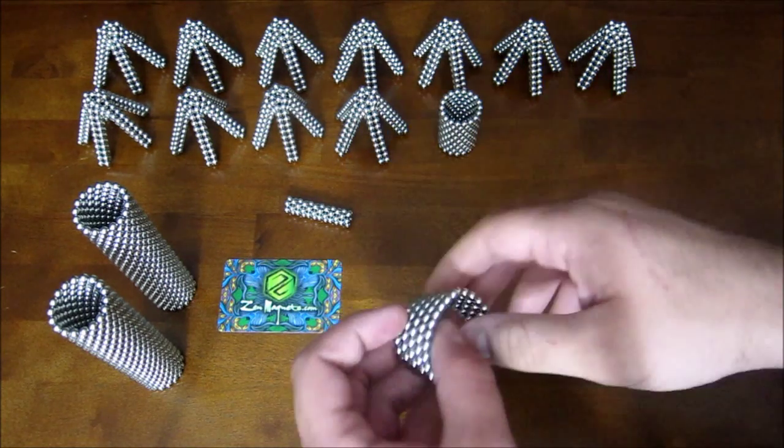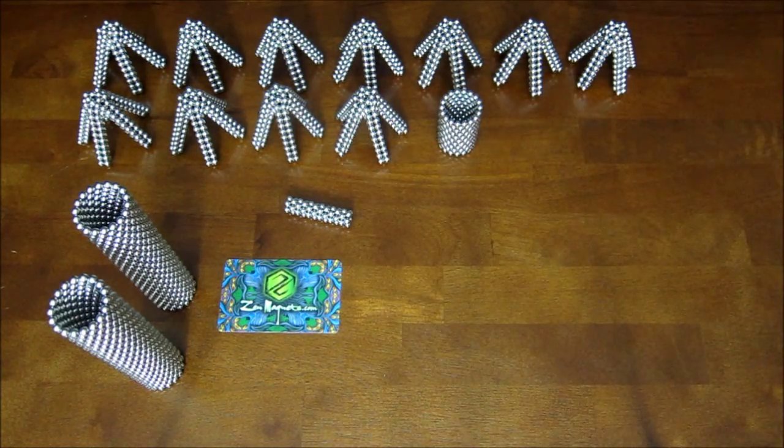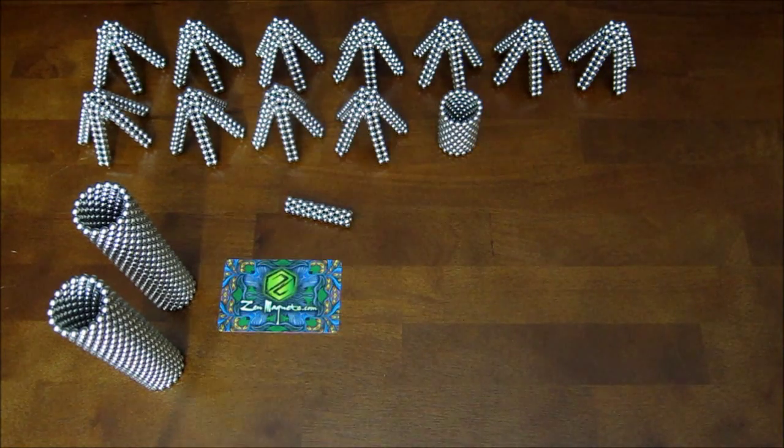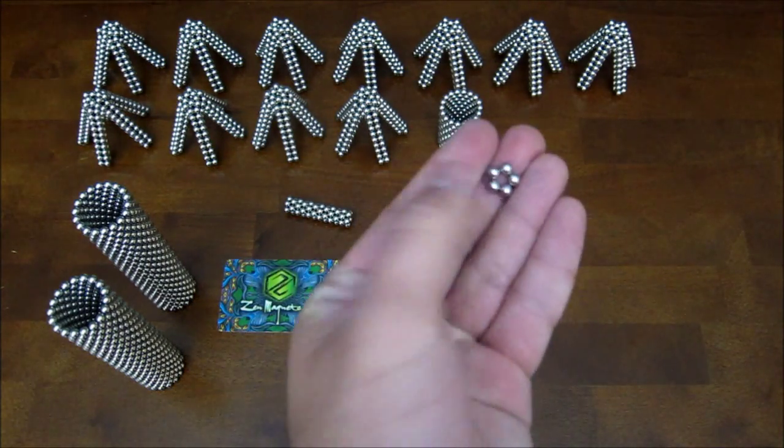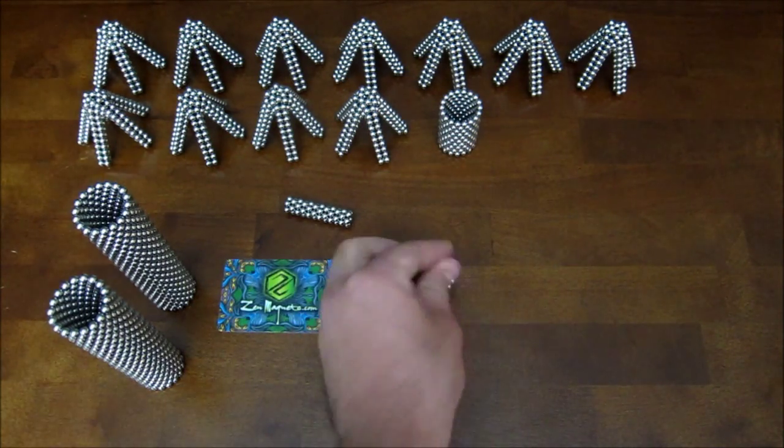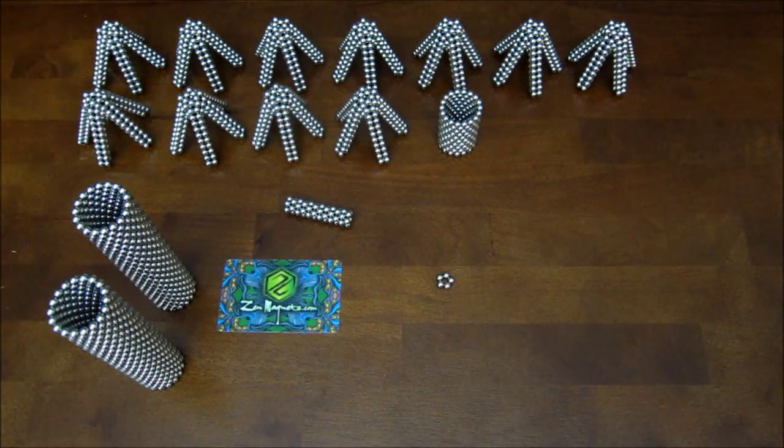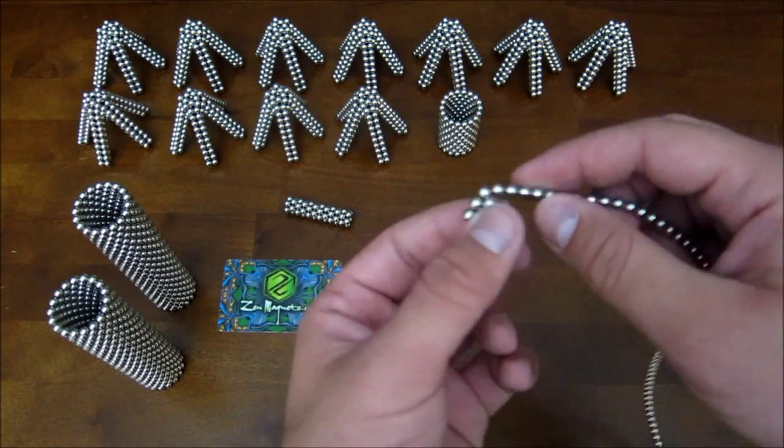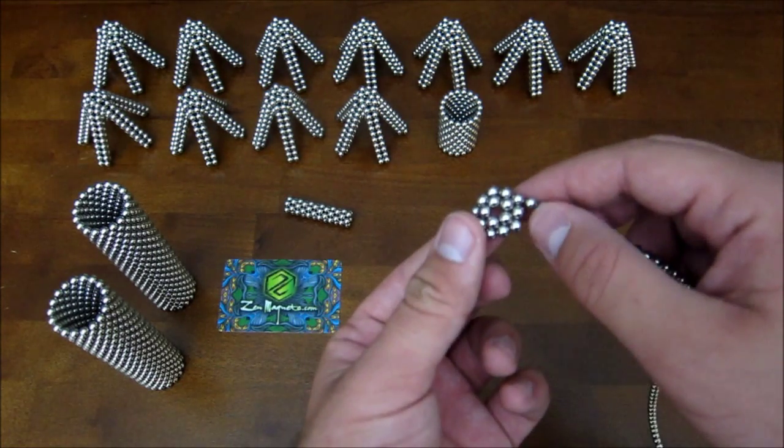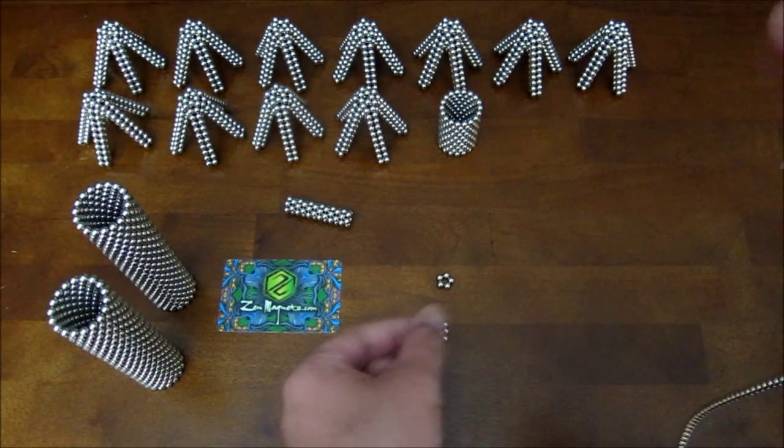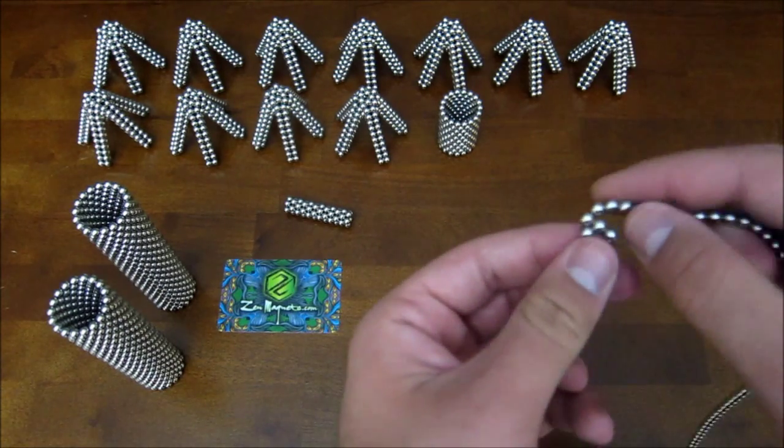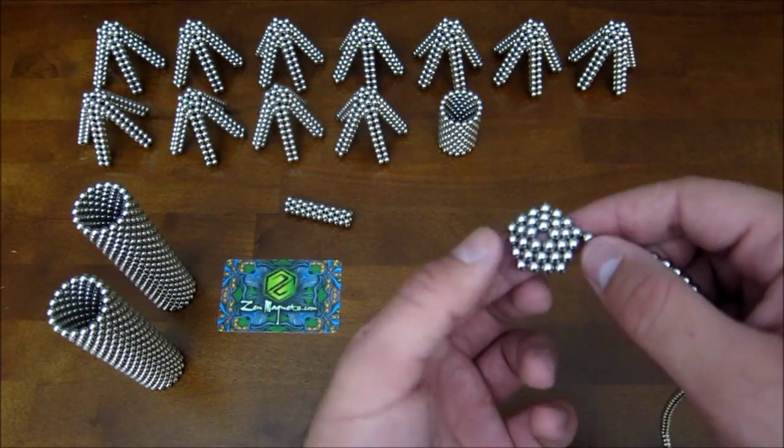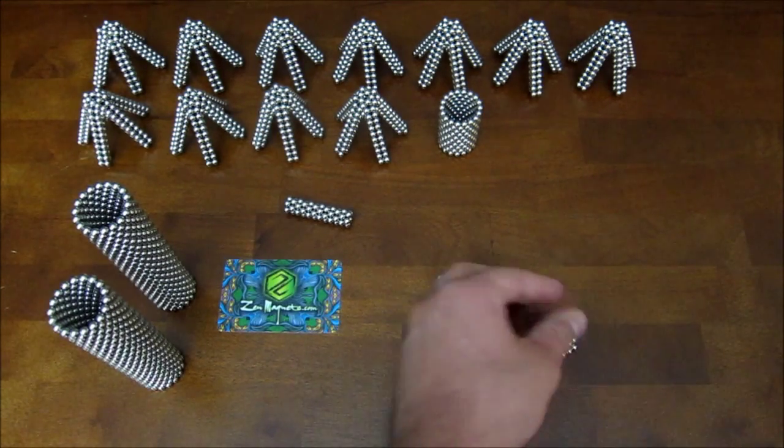The first thing you need is to build a pentagonal bipyramid or a decahedron. Which you do by getting a small pentagon, then by building a pentagon that is one ring larger, and then you build a third one that is even one ring larger still.